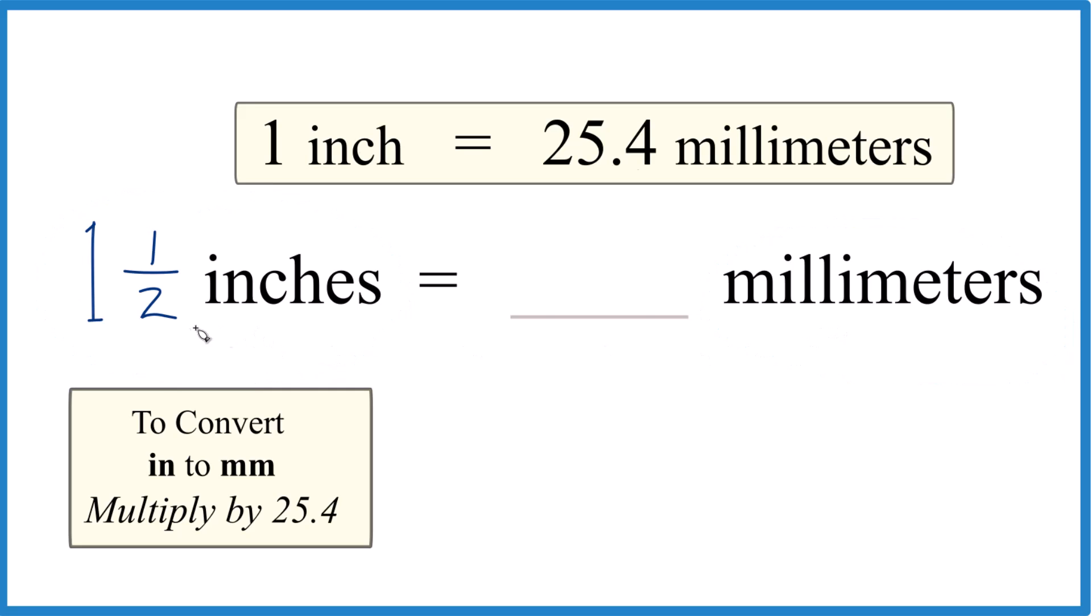So it's probably easiest to get this to be a decimal. So one half, that's 0.5. You can divide one by two, you get 0.5. So we have 1.5. That's the same as one half, but it's a lot easier to deal with here.